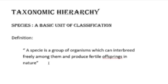We emphasize the interbreeding process occurring in nature. If interbreeding is carried out under artificial conditions, the offspring produced are not actually fertile. For example, in the artificial interbreeding of a male donkey and a female horse, the offspring produced is a mule, which is actually infertile, because this does not take place naturally but occurs under artificial conditions.